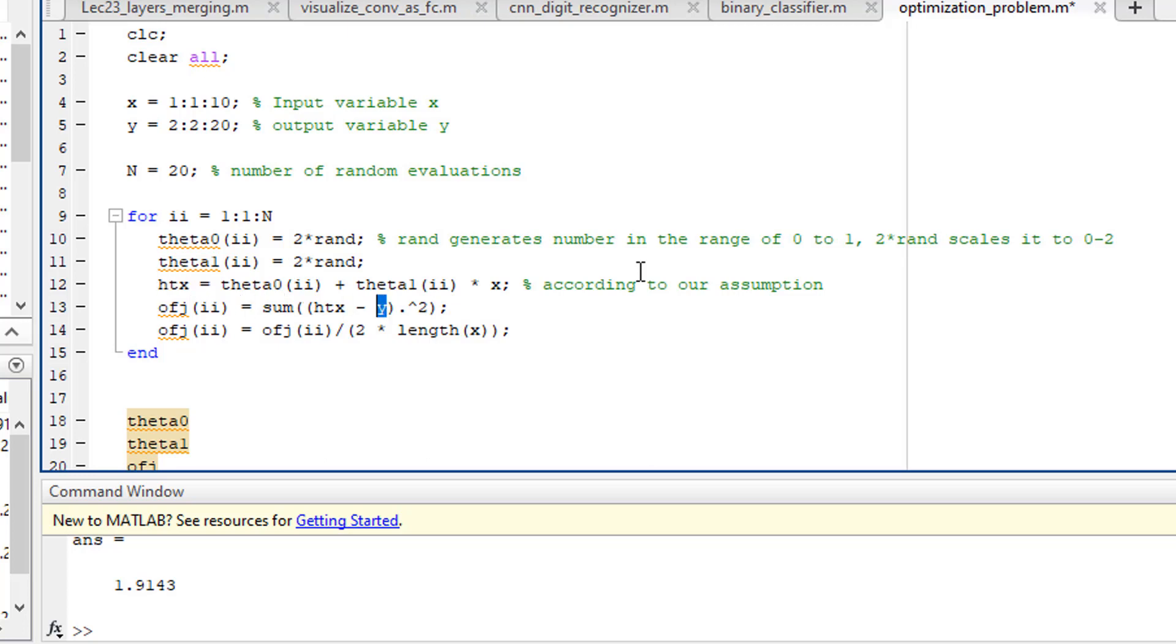Then we compute the difference or the error between true y and the estimated y which is y prime. Based on the random assignment to theta 0 and theta 1 we have computed y prime. Now this difference can be sum of absolute difference or sum of square difference. We want this difference to be as small as possible, ideally 0. Although it is not important but we may use the average difference for fitness.